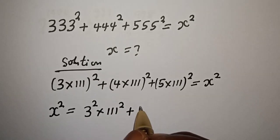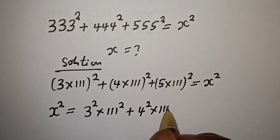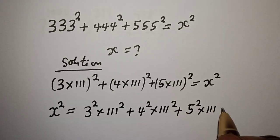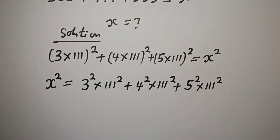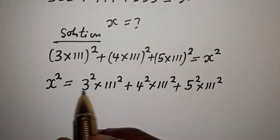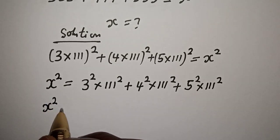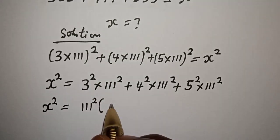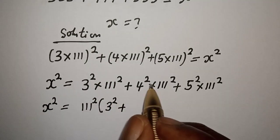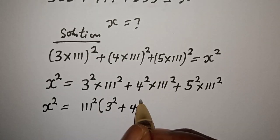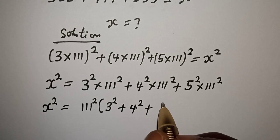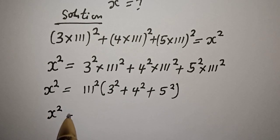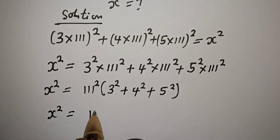So s squared is equal to 3 squared multiplied by 111 squared, plus 4 squared multiplied by 111 squared, plus 5 squared multiplied by 111 squared. We can see that 111 squared is common — let's bring it out. s squared is equal to 111 squared bracket 3 squared plus 4 squared plus 5 squared.